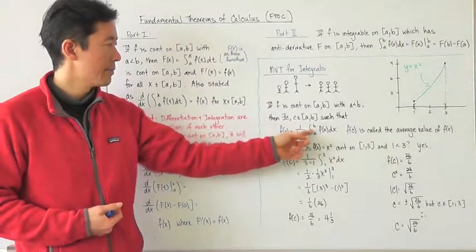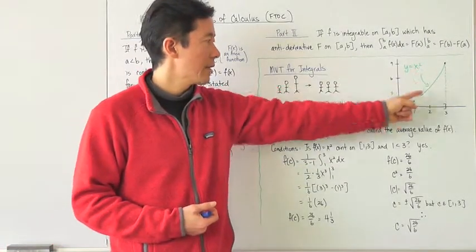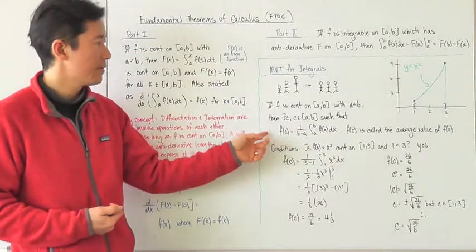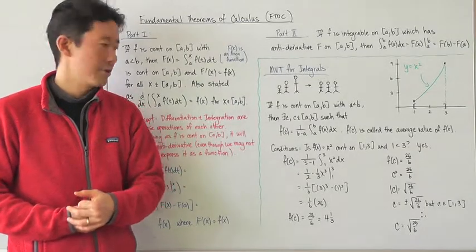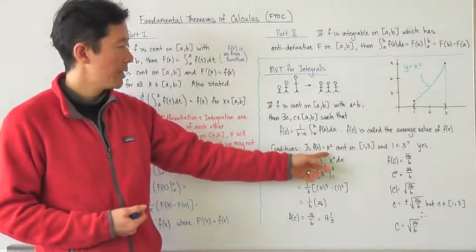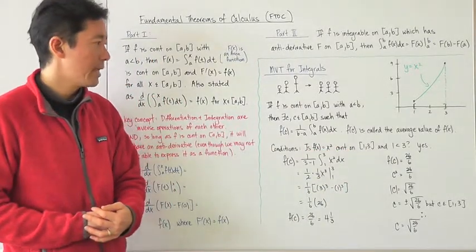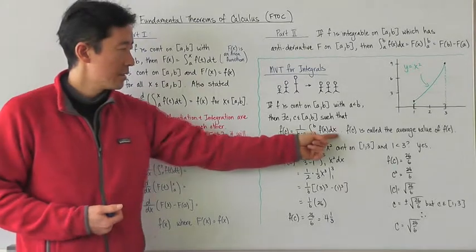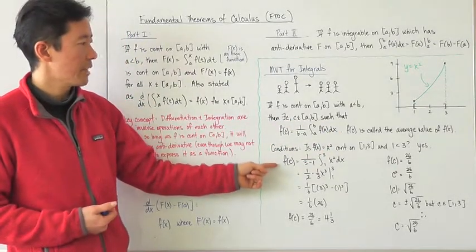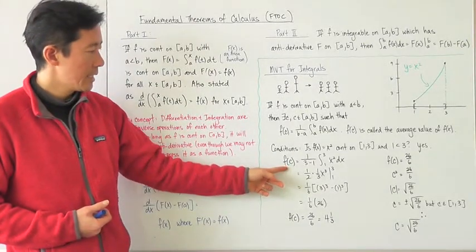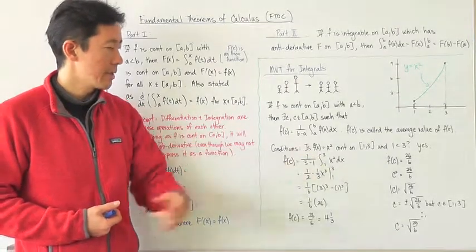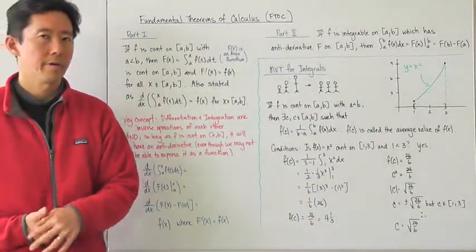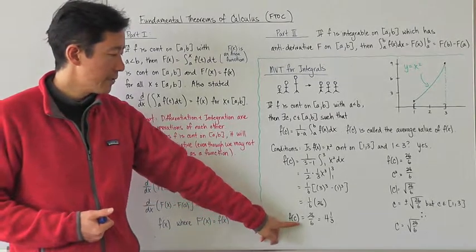Now let's go ahead and apply this theorem to the function y equals x squared on the closed interval from 1 to 3. Before we jump to the conclusion of the mean value theorem for integrals, we have to make sure that the conditions are first true. Is f of x, which is equal to x squared, continuous on the closed interval from 1 to 3, and is 1 less than 3? Of course the answer for those is yes, and so therefore we can go ahead and use the results of the mean value theorem for integrals to find the average value of f of x. F of c is going to be equal to one over three minus one, times the definite integral from 1 to 3 of x squared dx. The result is f of c equals four and one third.